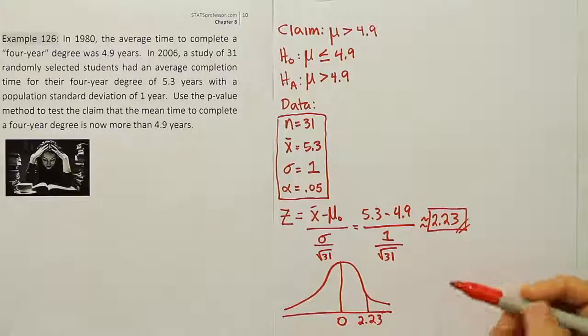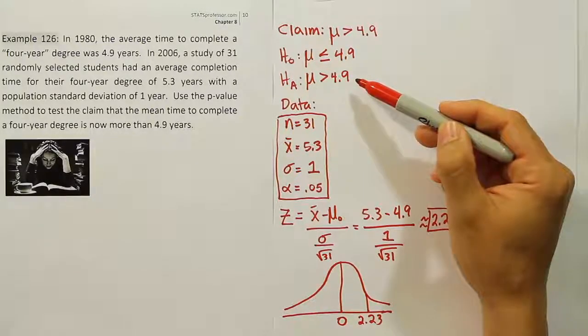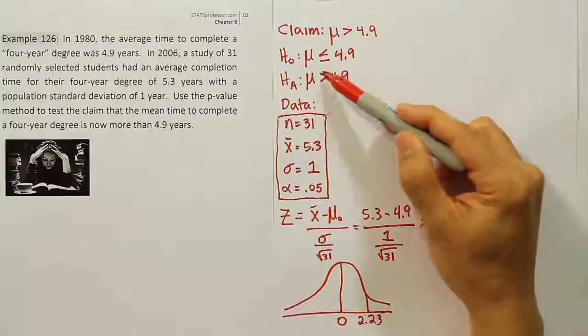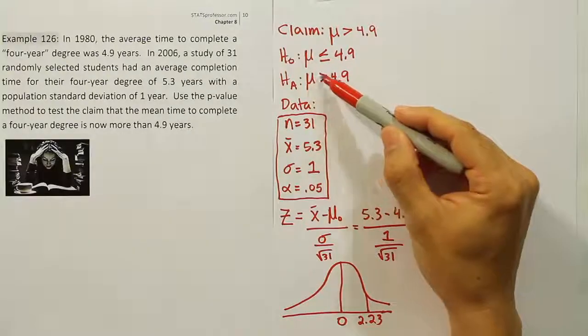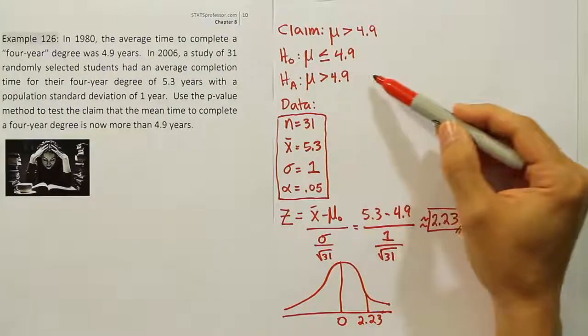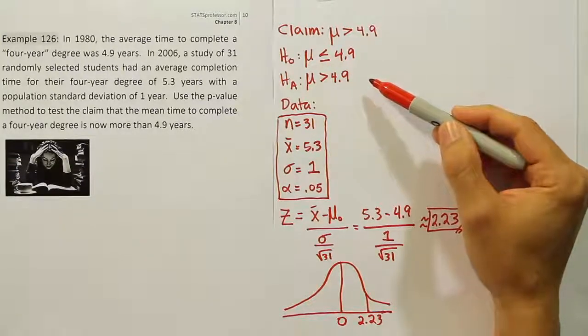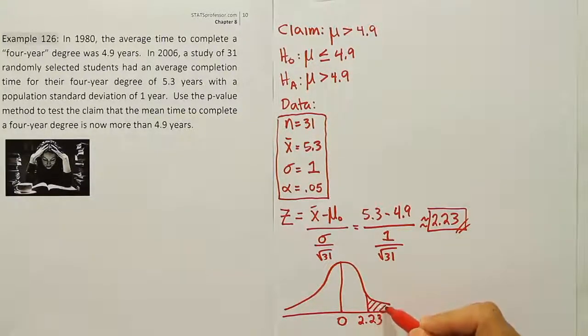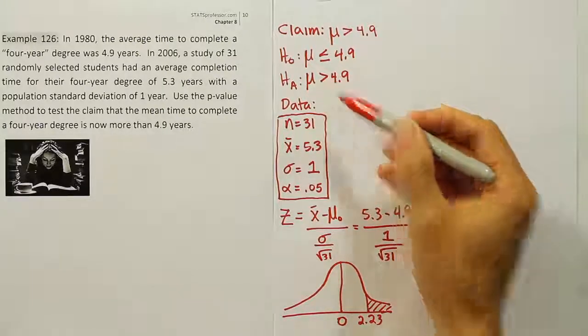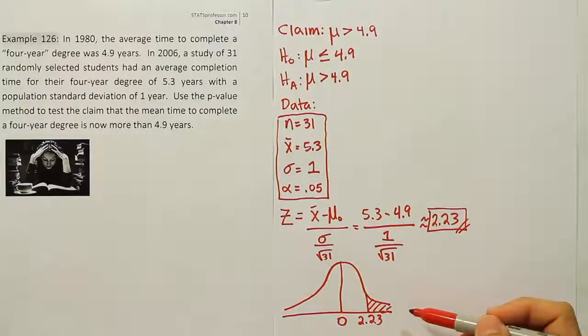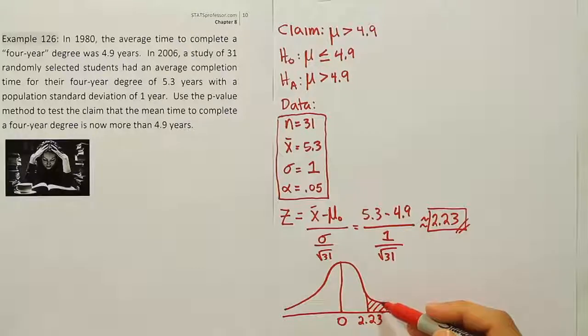Now we go to HA and identify what kind of test we're looking at. This says greater than, like an arrow pointing to the right, so it's a right-tailed test. For a right-tailed test, the rule to find the p-value is to find the area to the right of the test statistic. So this tailed area is our p-value.